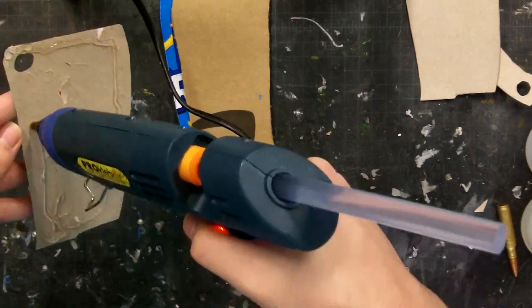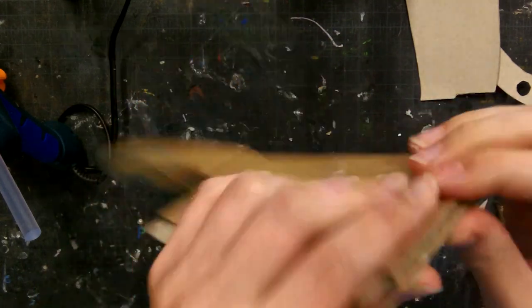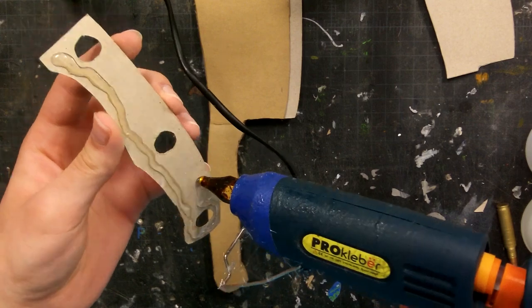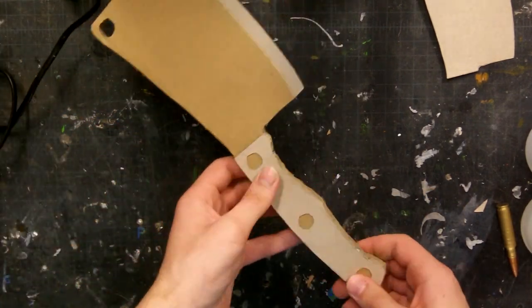Then I wanted to smooth out the blade so I traced and cut out the blade out of some cardboard. I glued it on there to smooth everything out and also give it a more uniform look.